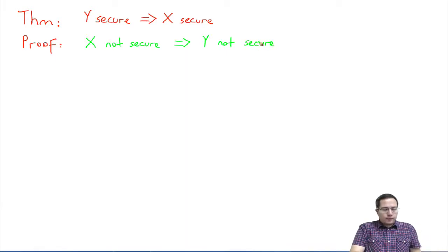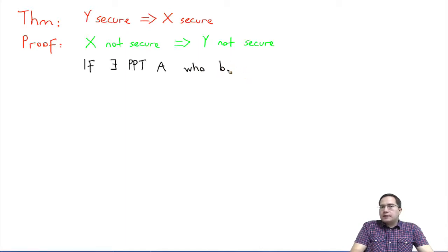The reasoning is as follows: we will show that if there exists a probabilistic polynomial time adversary, let's say A, who breaks X...